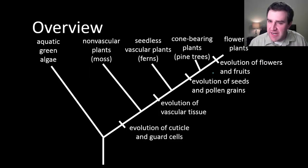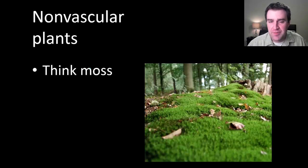All right, so with those major adaptations plants are able to survive on land, and that enables us to talk about our first group which we could call the non-vascular plants. For our purposes we can basically think moss. So moss are plants, they're very small plants, and they generally are only found in really wet places. So let's think about why they're so limited.